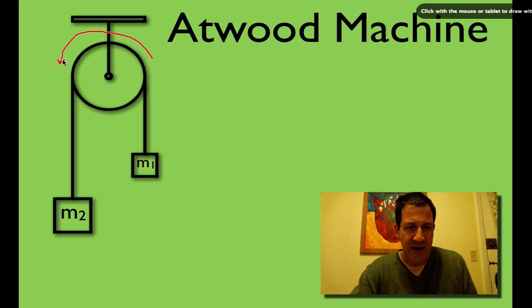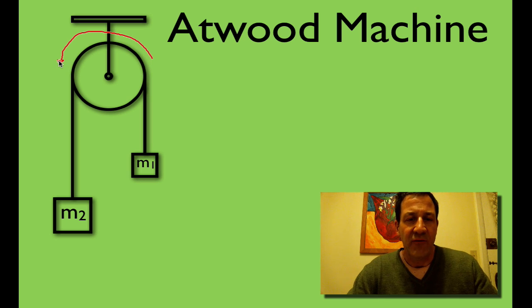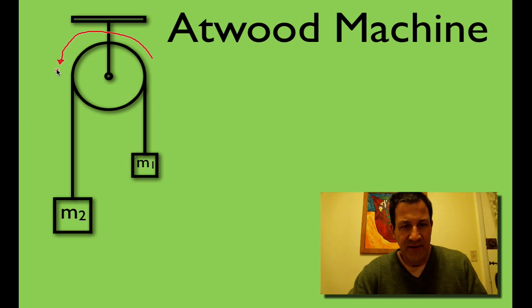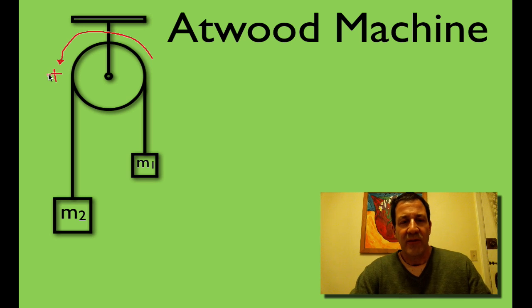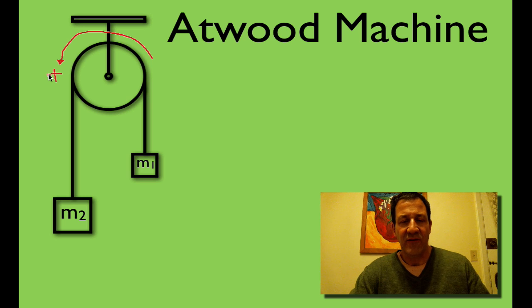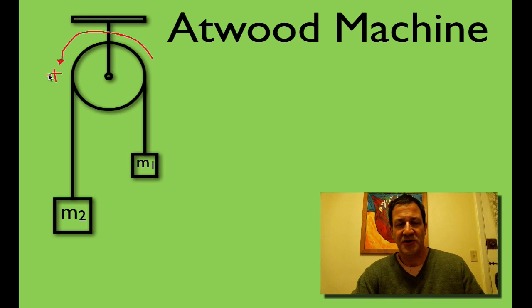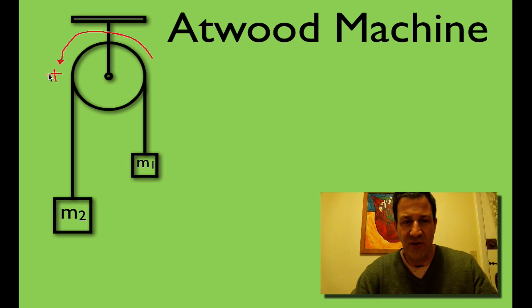Now this is important because we have to decide which direction we're going to call the positive direction for the pulley's rotation. It's easiest to call the direction of rotation the positive direction. The pulley is going to rotate counterclockwise, m2 is going to accelerate downwards, m1 is going to accelerate upwards, and we can use Newton's second law to calculate that acceleration.